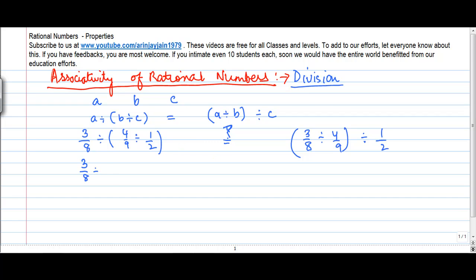We have 3/8 divided by 4/9. Now I change this division sign to multiplication and I switch the order of the numerator and denominator. 2 times 4 gives me 8, 9 times 1 gives me 9. So this equation becomes 3/8 divided by 8/9, or 3/8 into 9 divided by 8. So 3 times 9 gives me 27 divided by 64.